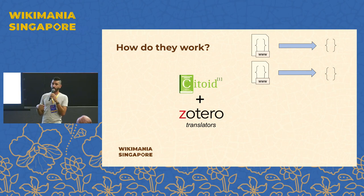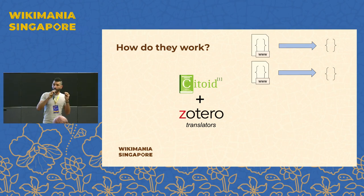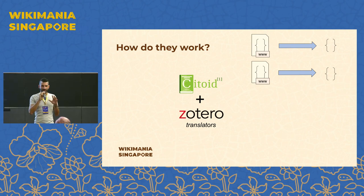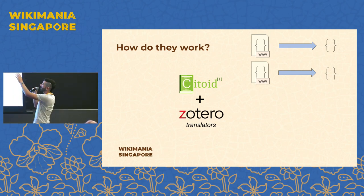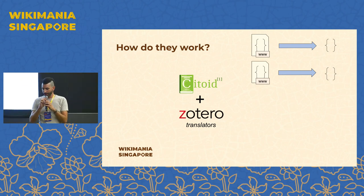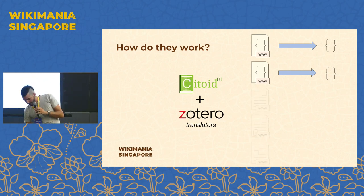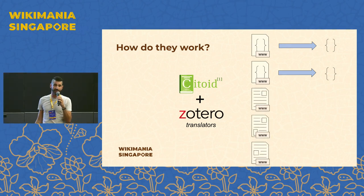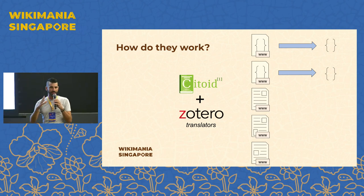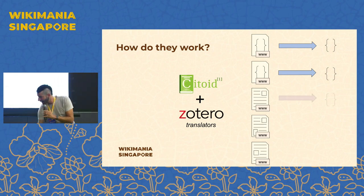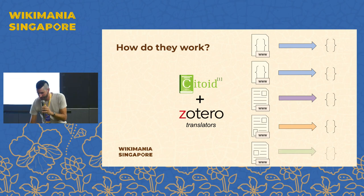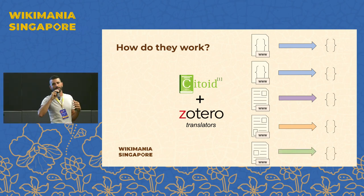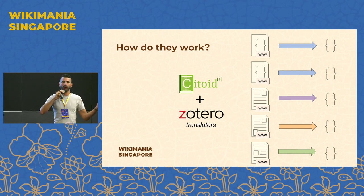This works very well when citation metadata has been embedded on the web page in a structured, standardized manner. If webmasters have followed recommendations to include embedded metadata, we can use generic translators to extract it. But in reality, many web pages do not include this metadata in a correctly structured or standardized way. The Zotero community addresses this by writing a specific translator for each domain — or sometimes a group of websites that share the same format.